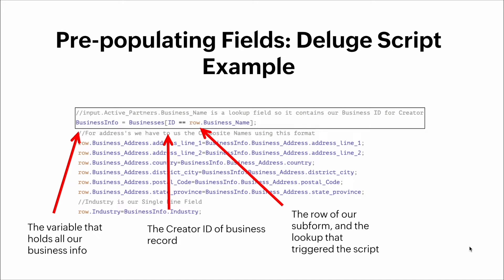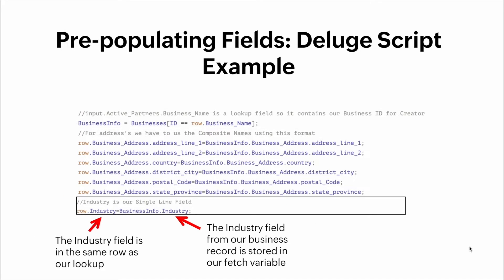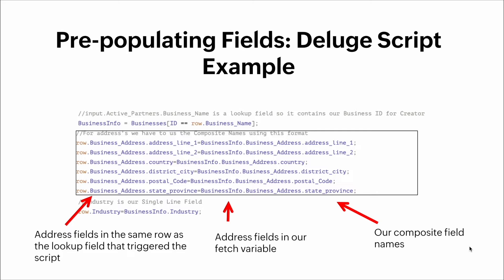For the `industry` field — which is a single-line field — it is in the same row as our lookup, and the industry value from our business record is stored in our fetch variable. For the address fields, we reference them in the same row as the lookup field that triggered the script, using the address fields from our fetch variable and our composite field names.